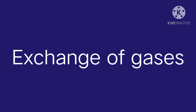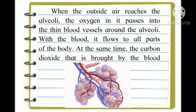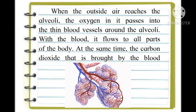Exchange of gases: when the outside air reaches the alveoli, the oxygen in it passes into the thin blood vessels around the alveoli and is carried to all parts of the body. At the same time, the carbon dioxide brought by the blood from all parts of the body enters the air in the alveoli. When we exhale, the carbon dioxide is given out with the air. In this way, an exchange of oxygen and carbon dioxide takes place in the alveoli.